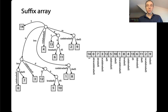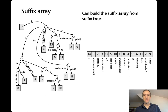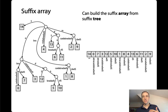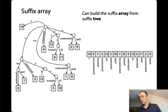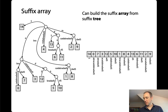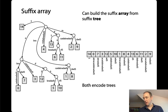We already know there's a relationship between the suffix tree and the suffix array. One way we can build the suffix array is to traverse the suffix tree, visiting children in alphabetical order, so that the order in which we arrive at the leaves — the leaf labels read off in order — equals the elements of the suffix array. But I'm going to further that relationship and say both of them in some sense encode trees.